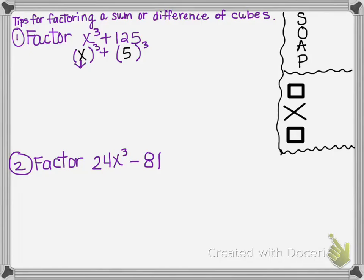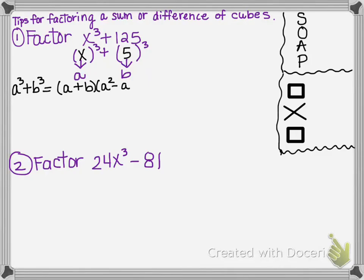Your first term that was cubed — that's your a — and the second term that was cubed, that's your b. That's the a and the b from the formula. So let's write out the formula. Once I determine that I have a sum of cubes, I'm ready to use the formula. For a sum of cubes, the formula is: a plus b, times a squared minus ab plus b squared.